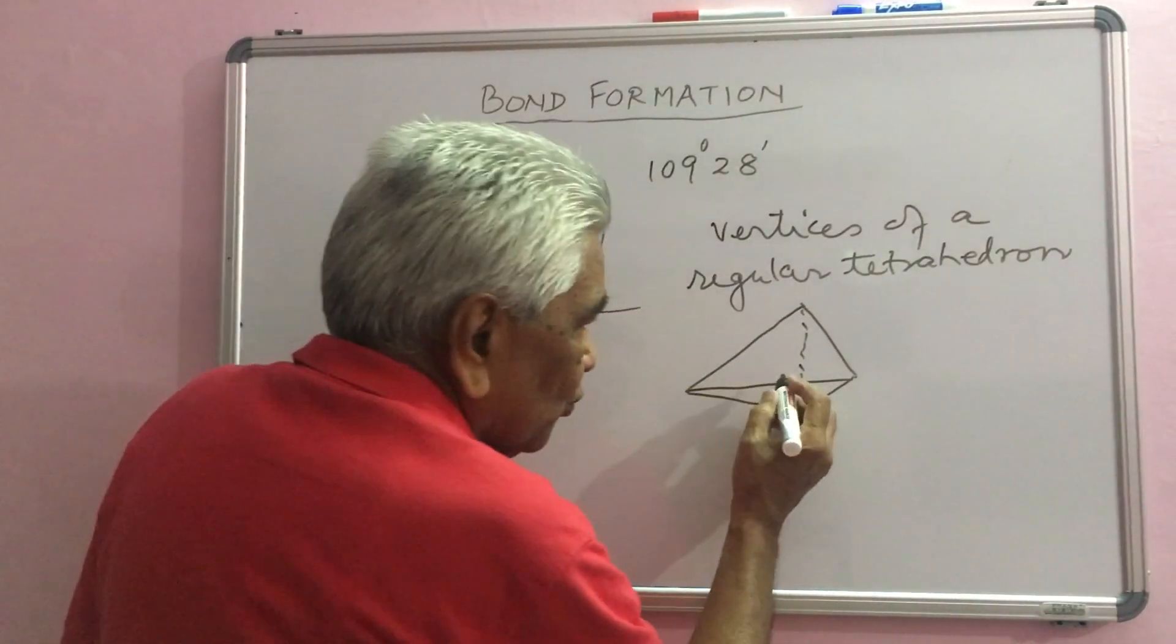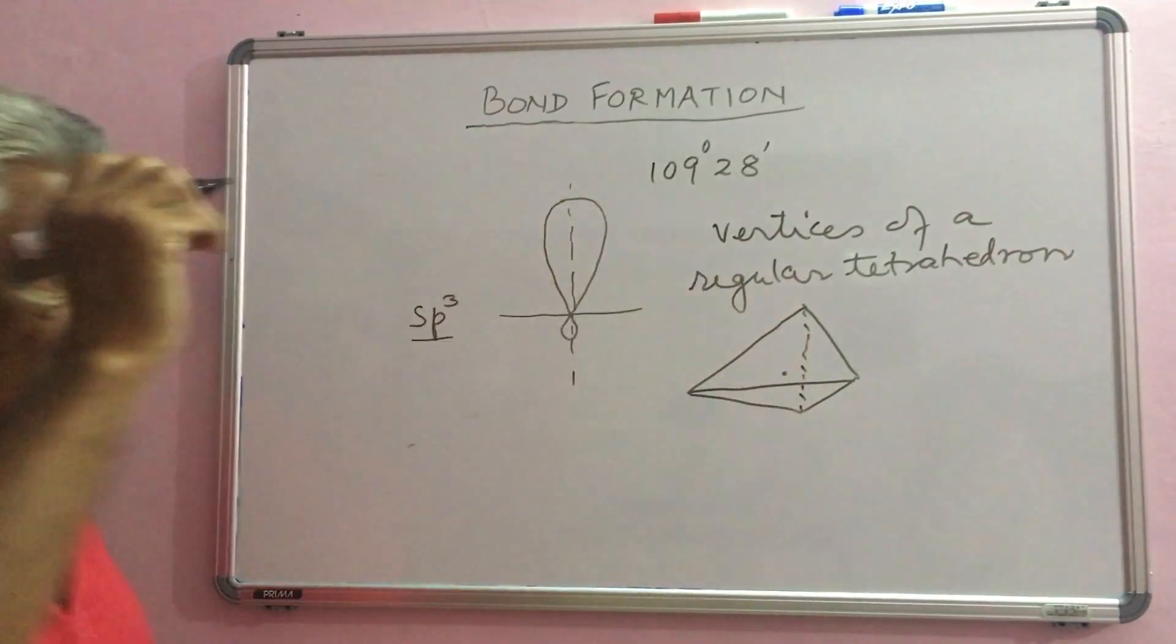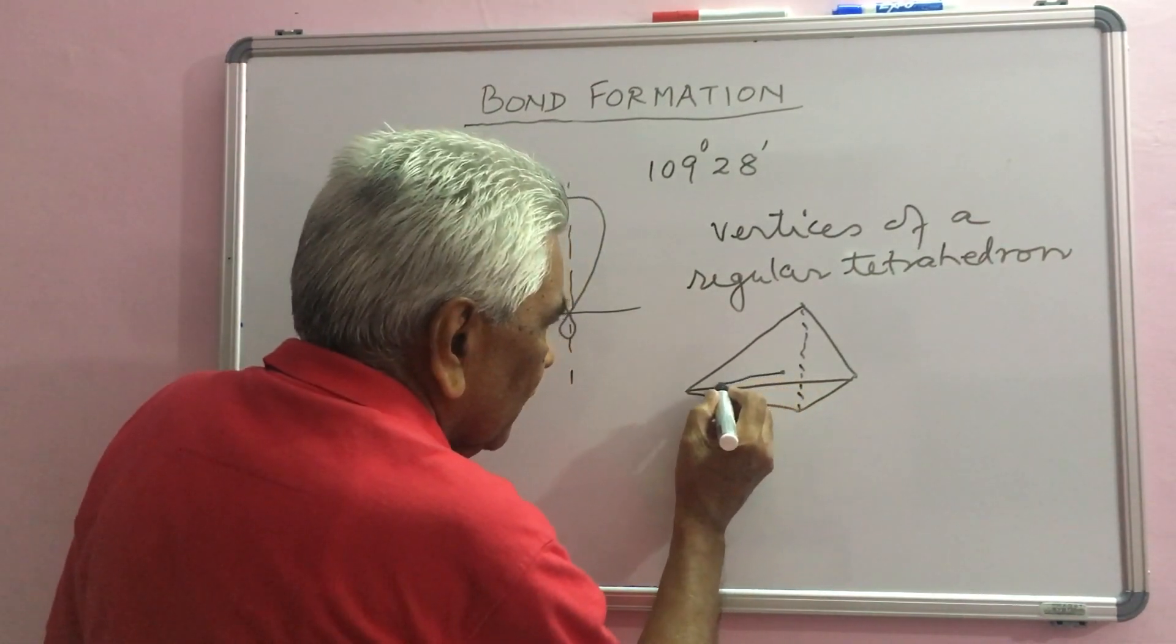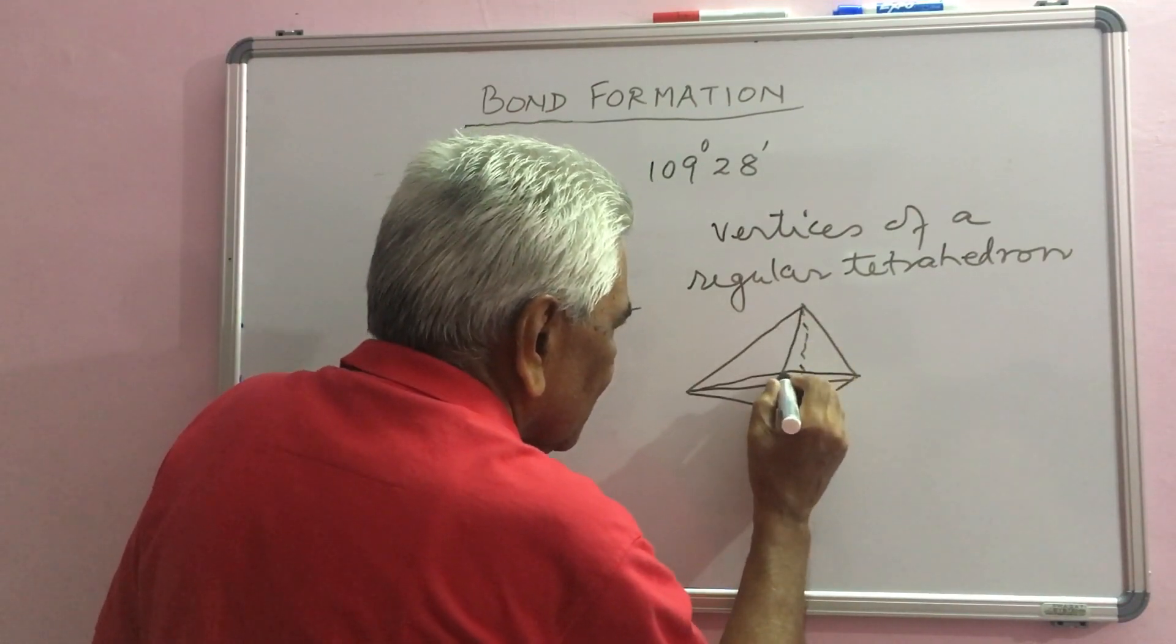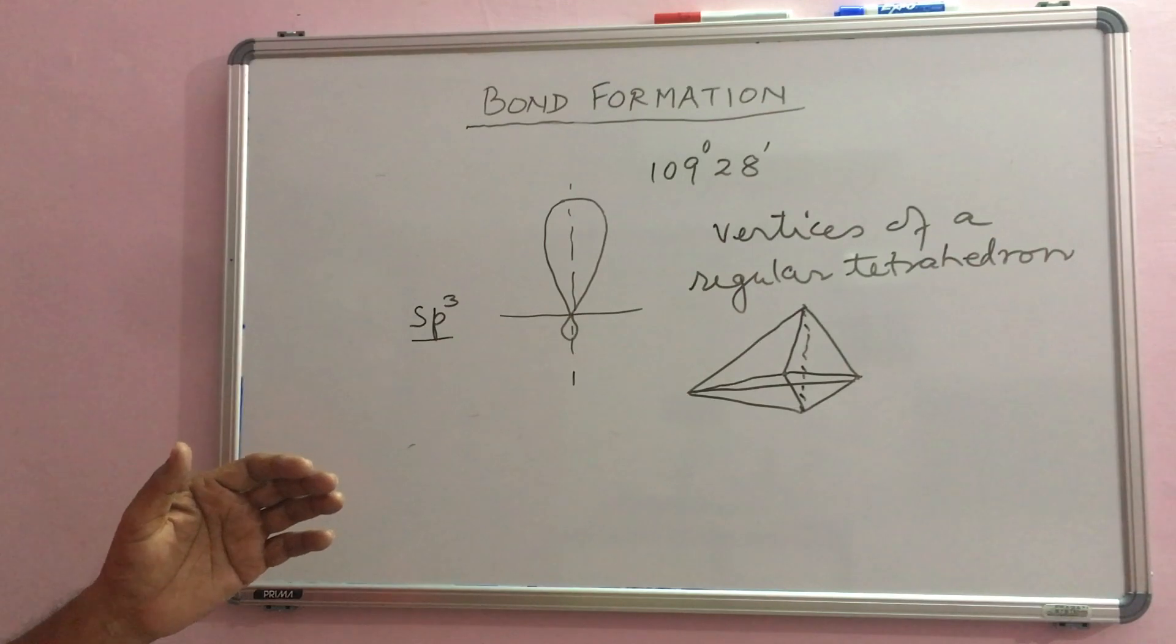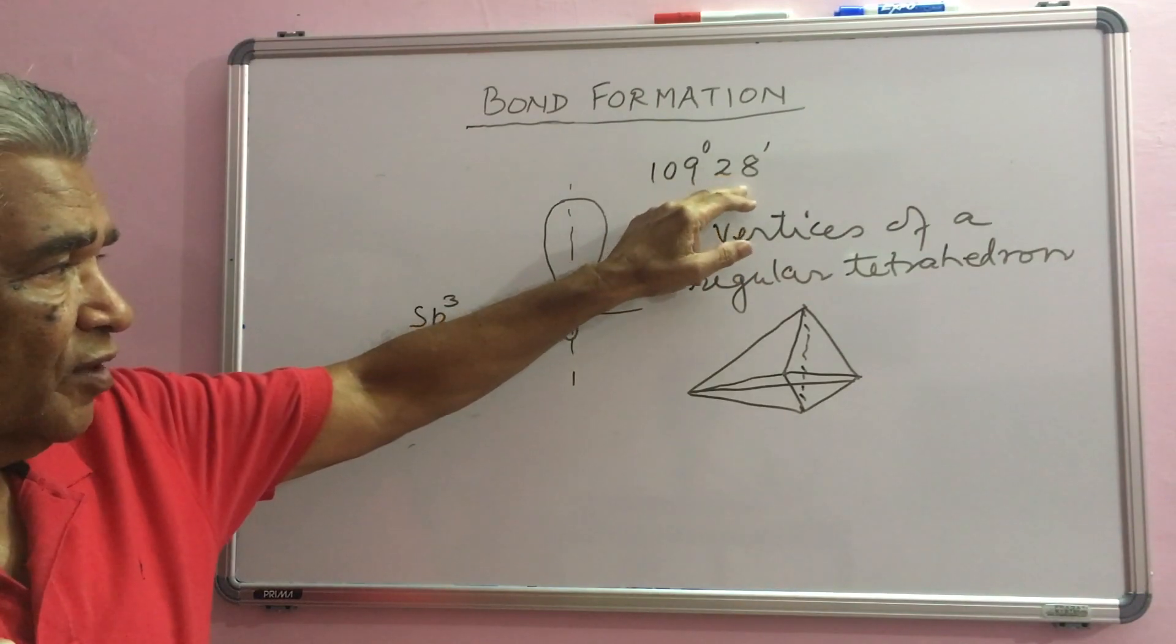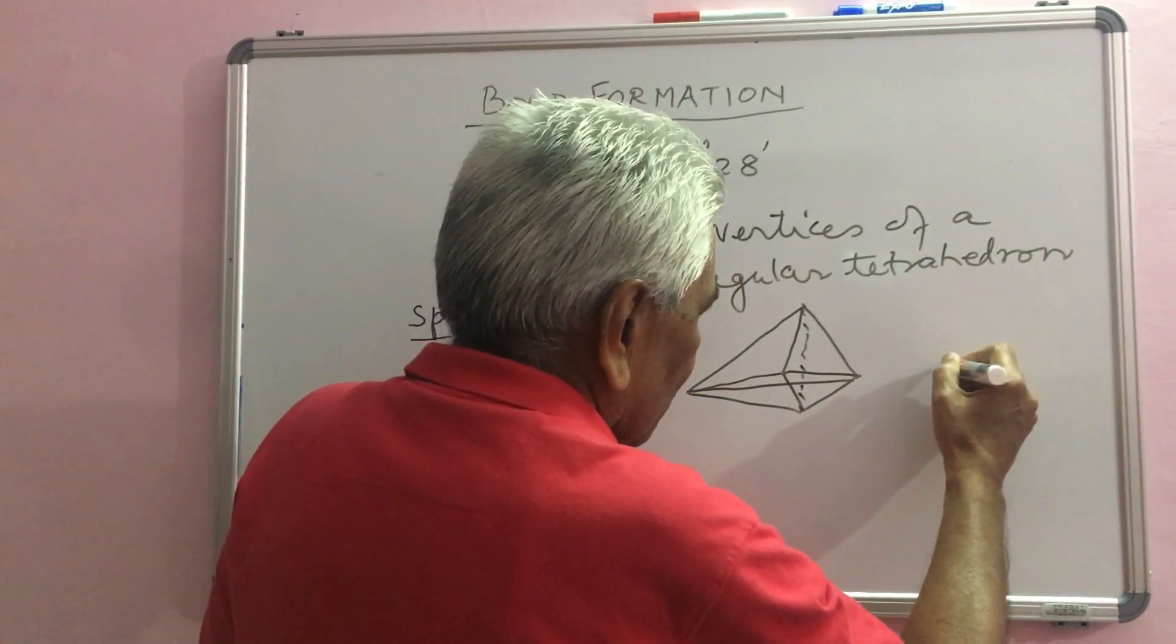If you put carbon at the centre of the tetrahedron and meet them, meet this point with vertices, you have 4 lines. They are directed at an angle of 109 degrees and 28 minutes. So, it will be somewhat like this.